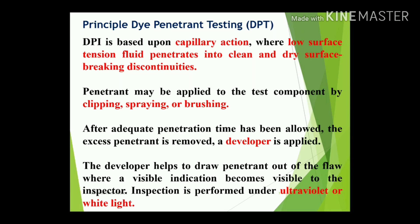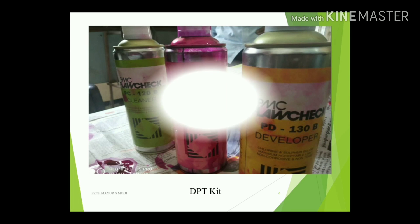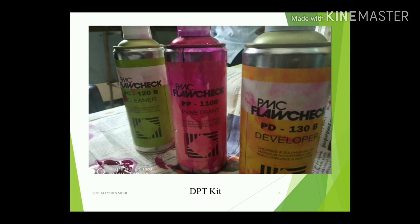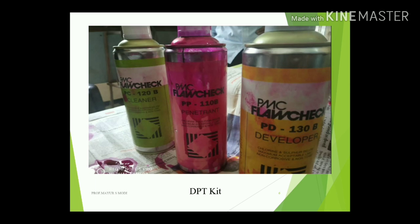The inspection is performed under ultraviolet or white light. The dye penetration kit includes three components: the cleaner, the penetrant, and the developer. These are used to identify surface defects on any kind of material, including ceramics, ferrous, non-ferrous, and plastics.